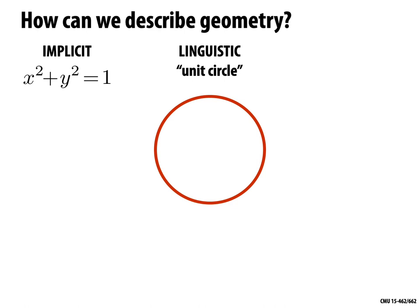How else might you describe this circle mathematically? One common approach: the circle is the set of all points x, y such that x² + y² = 1. That's a sort of implicit description — it doesn't tell us which points are in the circle, but it tells us how to decide if a given point is in the circle. Another common formula uses sine and cosine: the circle is the set of all points (cos θ, sin θ) for θ in [0, 2π]. That gives us our x and y components — this is an explicit description.